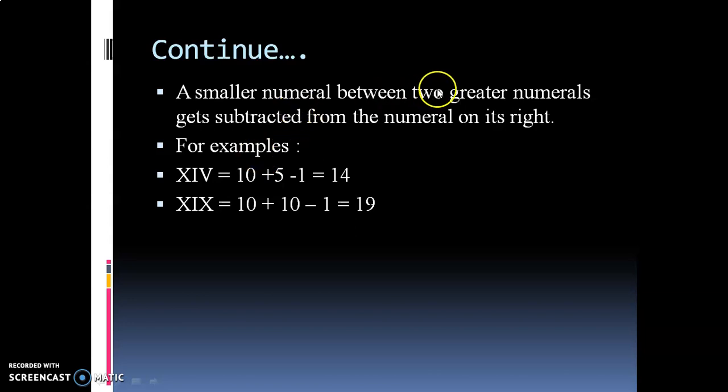A smaller numeral between two greater numerals gets subtracted from the numeral on its right. For examples: XIV = 10+5-1 = 14. XIX = 10+10-1 = 19.